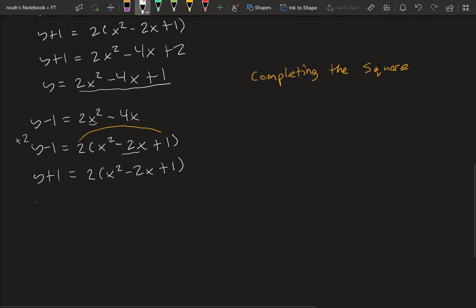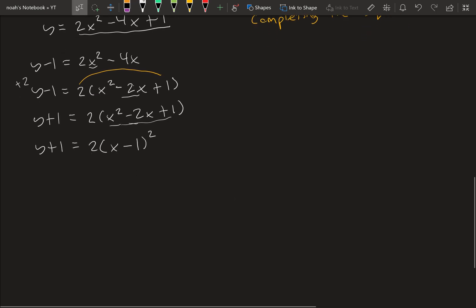2 times x squared minus 2x plus 1. And then last thing, we want to factor this polynomial or quadratic. To do this, we're going to put x minus this second term divided by 2. So it's minus 2 divided by 2 is 1, and then squared. Now that we have it in this form, we can analyze this quadratic.